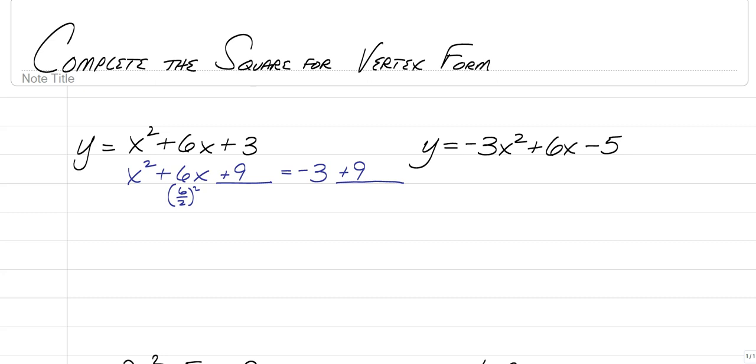And then what we're going to do is simplify, so we have x squared plus 6x plus 9 is equal to 6. Now the next step was writing it as the square of a binomial. So x squared plus 6x plus 9 can be written as x and then half of your b value, so half of a positive 6 is a positive 3.